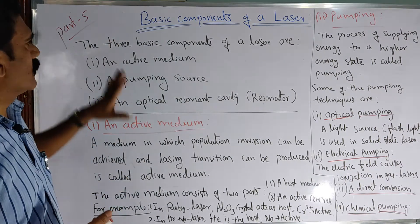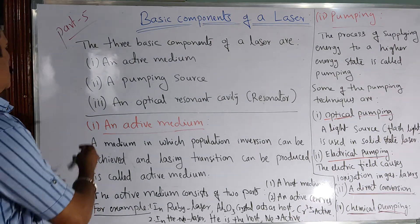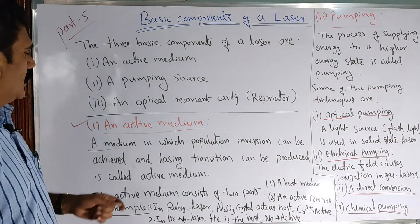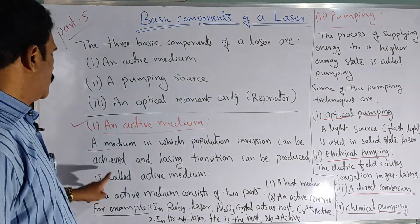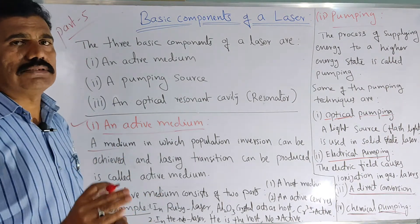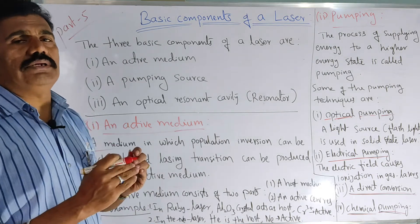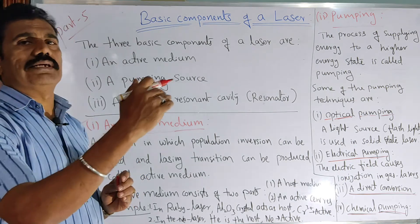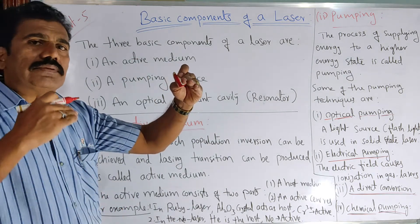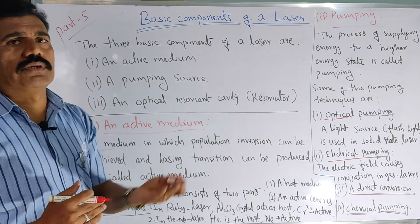Now let us discuss one by one. First, the active medium. How do you define the active medium? It is a medium in which population inversion can be achieved. One of the basic requirements for the production of laser is population inversion. We know that the number of atoms in the ground state is normally greater than in the excited state, but after excitation, the number of atoms in the excited state should be greater — that is, N2 should be greater than N1. That is called population inversion.